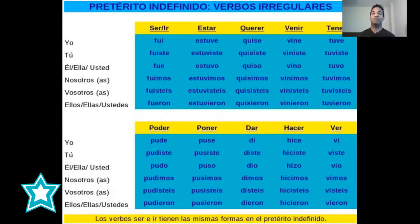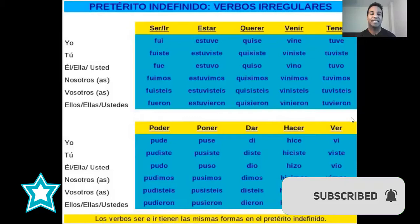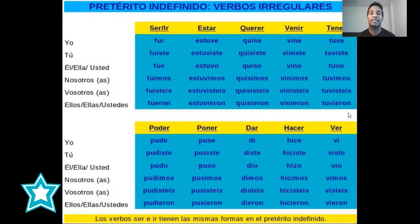Muy bien. Ahora tengo un bonus para ustedes — I have a bonus for you. Vamos a ver algunas frases con algunos de estos verbos. Y por favor, translate — traduce estas frases para mí en los comentarios.